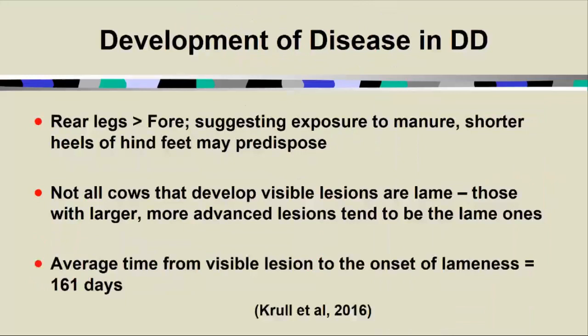We tend to see digital dermatitis more commonly on the rear legs than the front. That suggests cattle are being exposed to manure for greater periods of time as they lay in free stalls — just because of the way the limbs are positioned when they lay down, the front feet heels tend to be pointed upward while the hind legs tend to be pointed downward. There are also shorter heels on hind feet, which may predispose these animals to get that inoculum up into the interdigital skin at the heel. This is a really interesting disease because it takes a long time for lesions to develop — the average time from a visible lesion in a field study to the onset of lameness was four months.